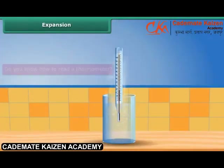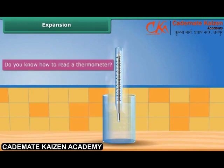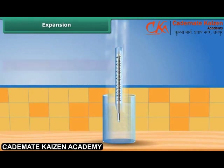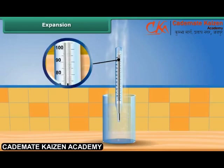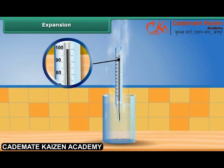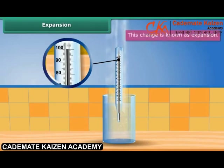Do you know how to read a thermometer? The thermometer shows the temperature when the mercury inside it expands. Since there is a change in the state of the mercury, the thermometer is able to display temperature. This change is known as expansion.